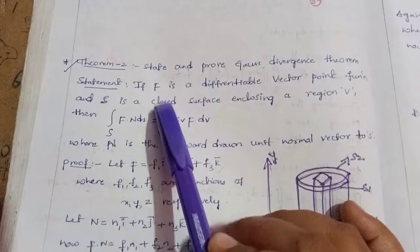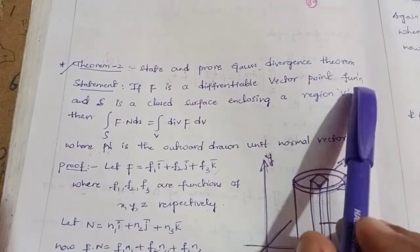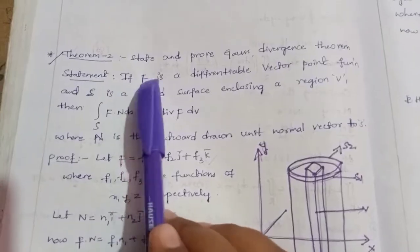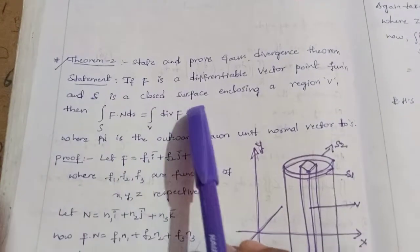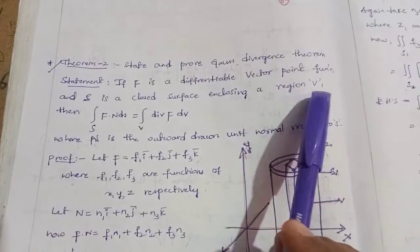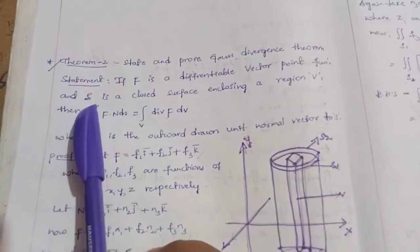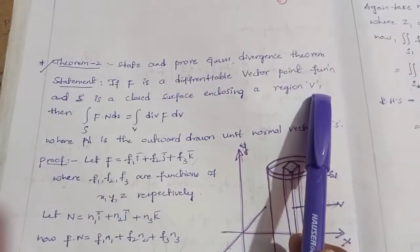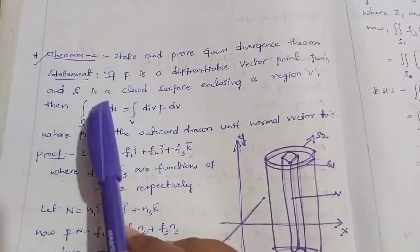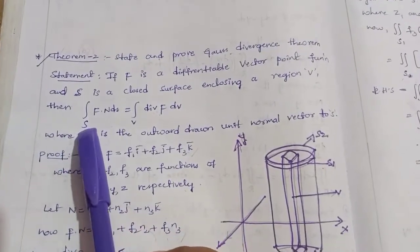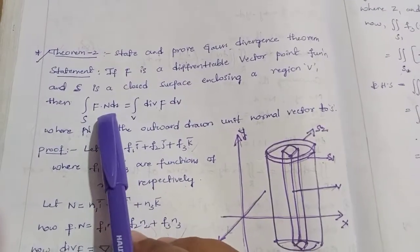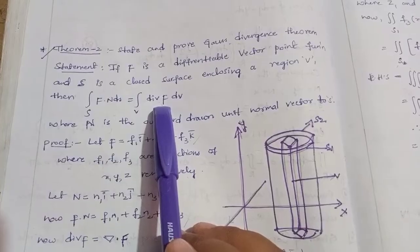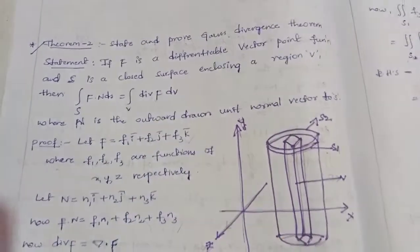If F is a differentiable vector point function, and S is a closed surface enclosing region V, then the surface integral of F into n ds is equal to the volume integral of divergence of F bar into dV.